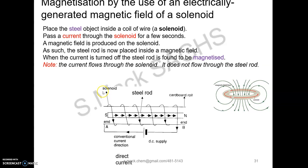In this method of making a permanent magnet, what is different is we use a steel bar. A current is passed through the solenoid for a short time, producing a magnetic field, and the steel rod becomes a magnet with magnetic poles. When the current is turned off, the steel rod is found to be magnetized — that is, a permanent magnet — as opposed to a temporary magnet, where when the current is switched off, the iron object is no longer a magnet.